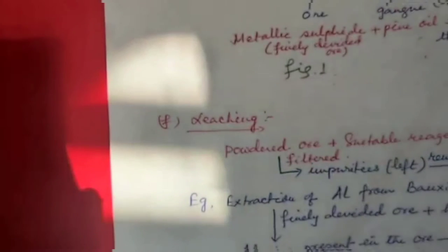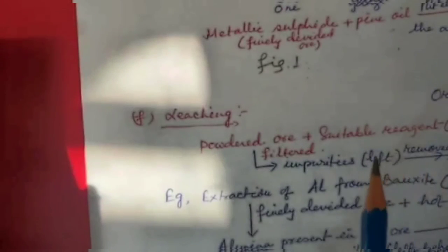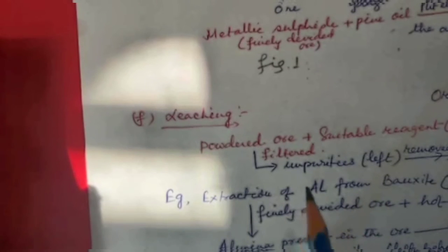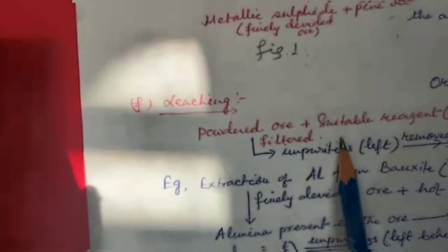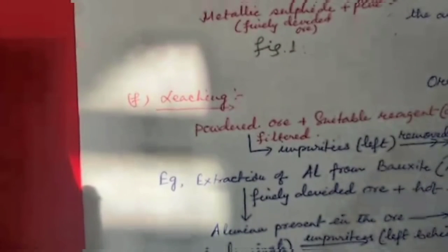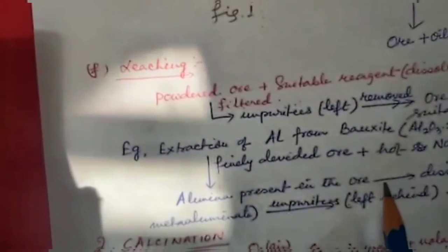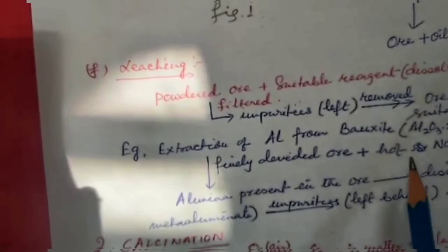Leaching: In this method, the powdered ore is treated with some suitable reagent which may dissolve the ore and not the impurities. The impurities are filtered off and the ore is recovered from the solution by suitable chemical methods.